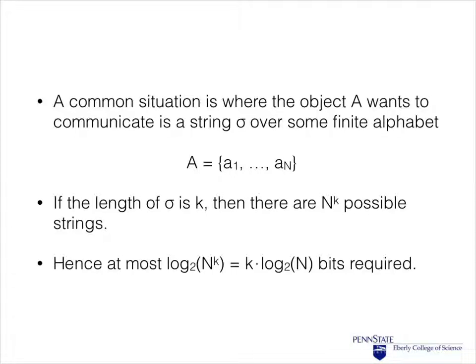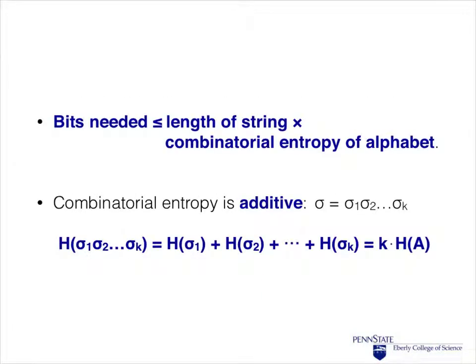For instance, when the message is just plain English, then the underlying alphabet would be the 26 characters of the English alphabet. Now assume we want to communicate a string of length k. Then there are n^k possible such strings over the alphabet A. The combinatorial entropy of this is then log₂(n^k), which is just k times log₂(n).